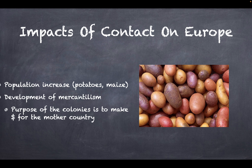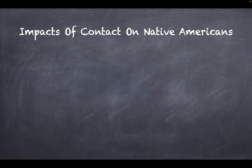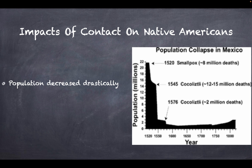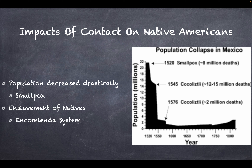The impacts of contact on Native Americans were devastating. Populations decreased drastically as a result of diseases such as smallpox — in certain areas, as much as 90 percent of Native Americans died due to contact with European diseases. We'll also see the enslavement of natives by the Spanish and the encomienda system, which we'll discuss in a future video.